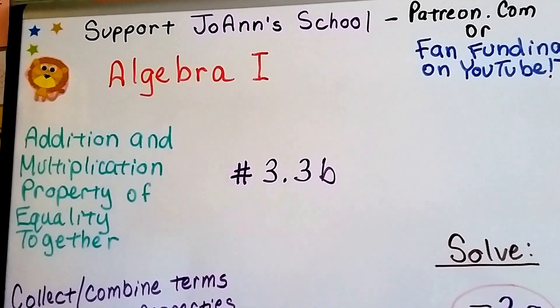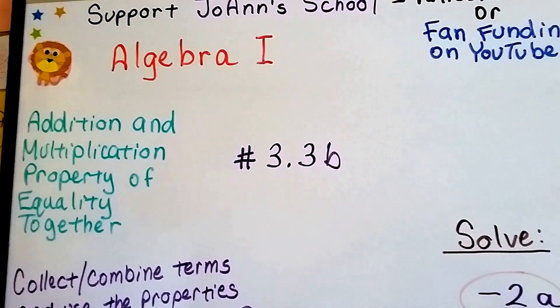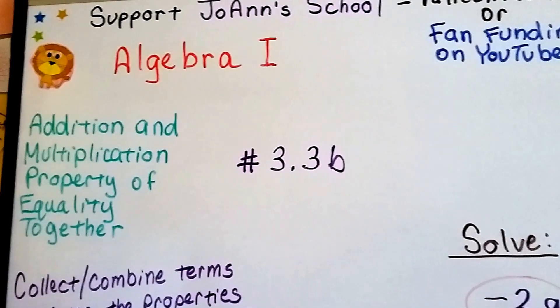Algebra 1 number 3.3b. We're talking about the addition and multiplication properties of equality and using them together.